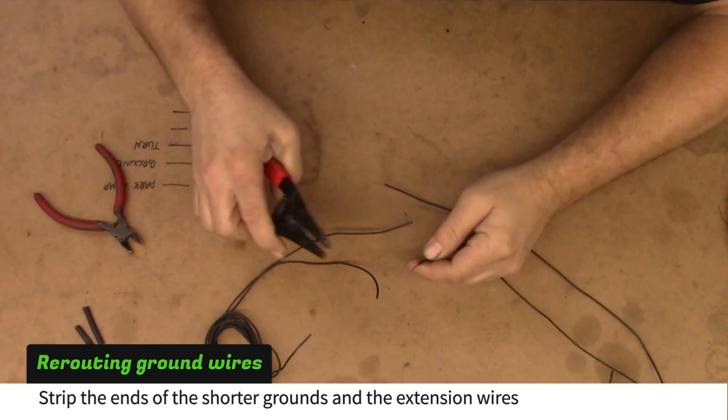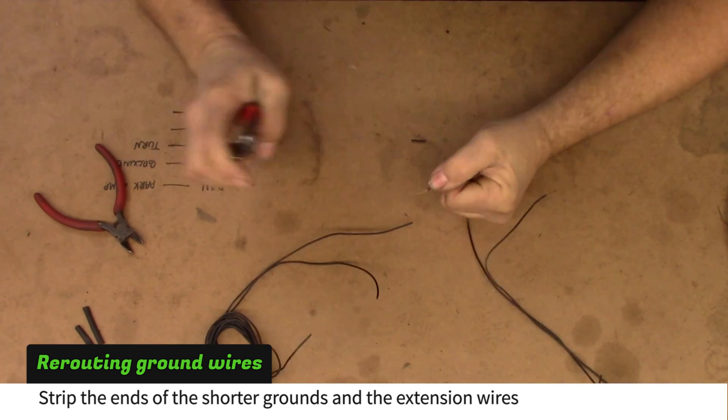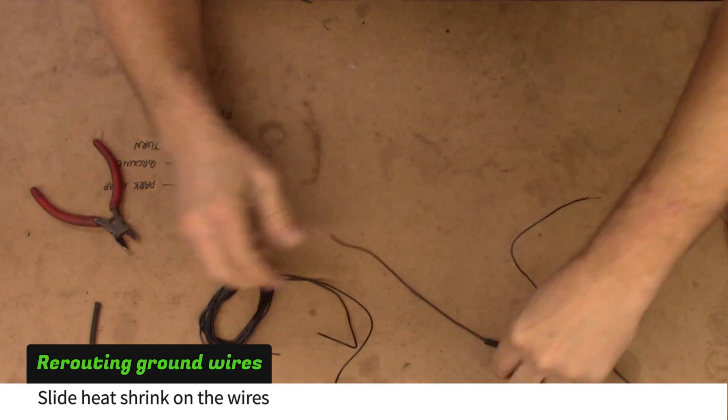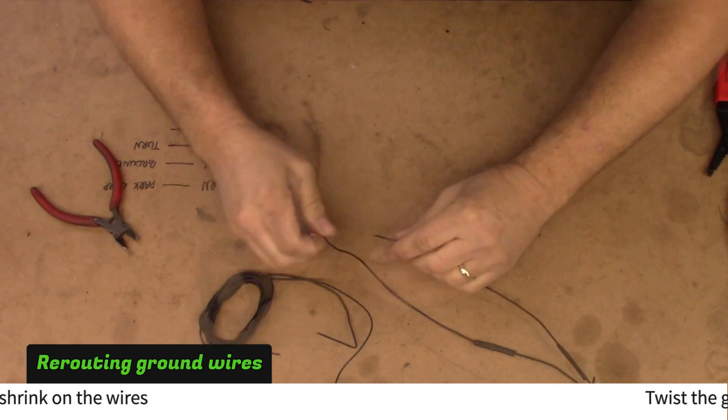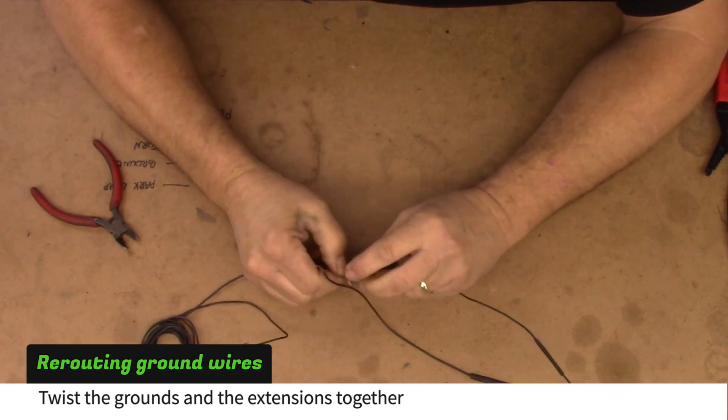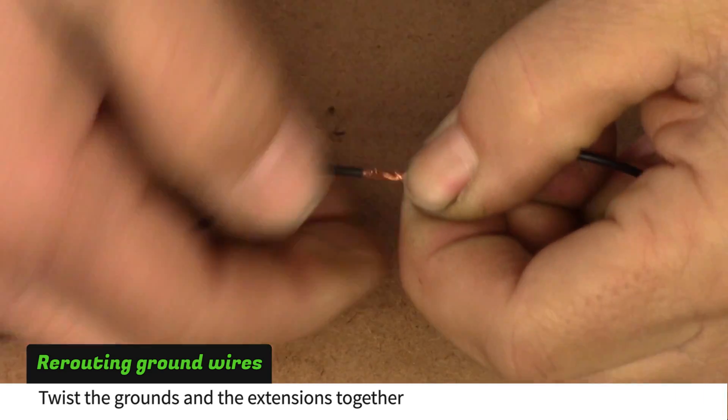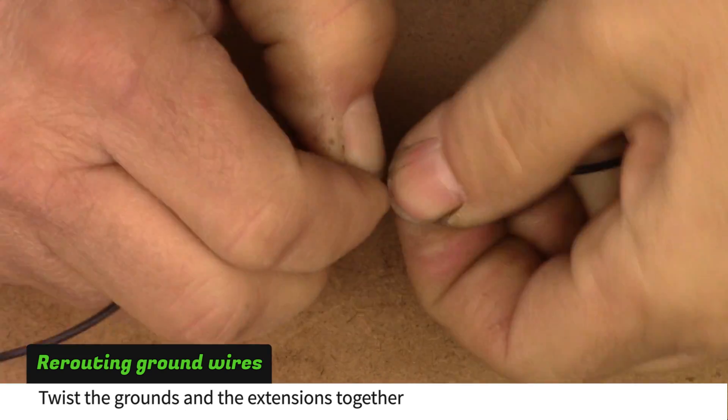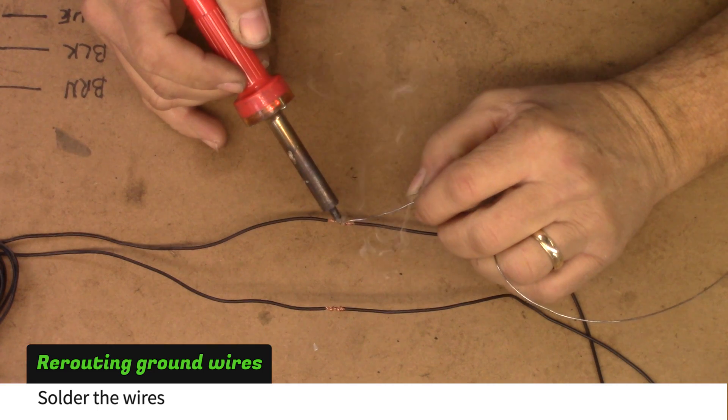Strip the ends of the short ground lug wires and the ends of the extensions. Slide heat shrink on the ground lug wires. Twist the wires together. Solder the wires and cover the exposed portions with heat shrink.